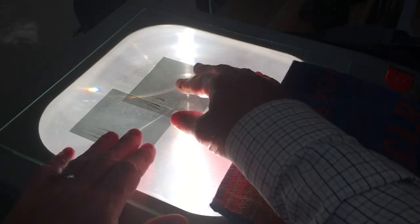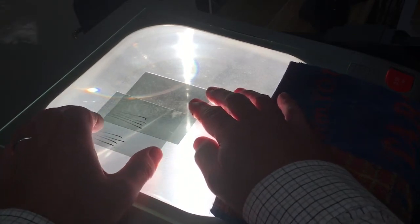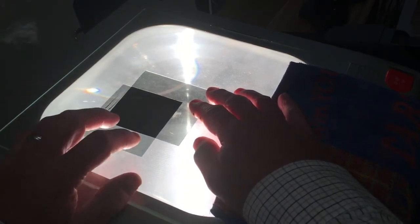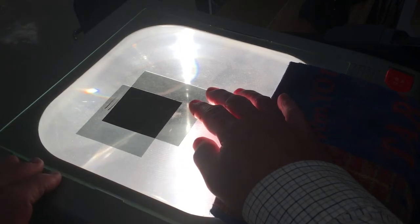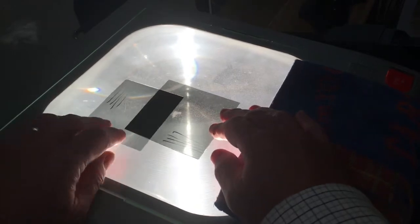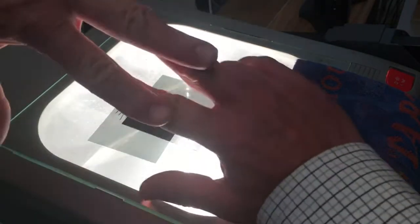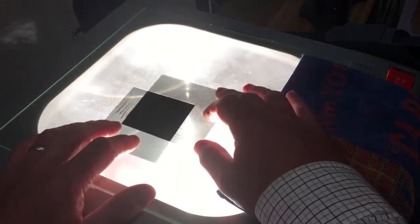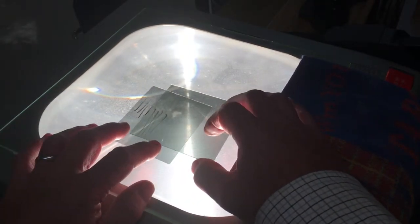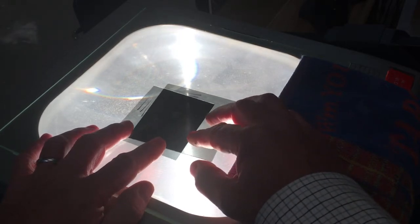But if I rotate this one 90 degrees, you'll see that it blacks out, that there is no light transmitted because the lines are perpendicular to each other. They're crossed. Instead of being parallel, they are crossed. If I rotate it back, we get light again, maximum here when they're parallel. And then again, rotating 90 degrees and we get no light at all.